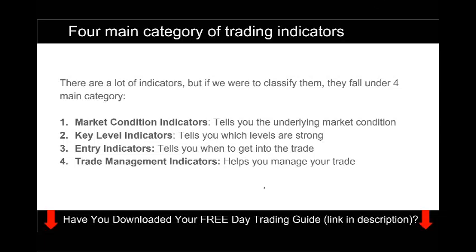The first category is market condition indicators, which tell you the underlying market condition. The second is key level indicators, which tell you which levels are strong so you can determine whether to buy or sell off that level. The third is entry indicators, which most of you are familiar with — in fact, most of you only use entry indicators, just saying 'stochastic is up, that's my entry trigger, I buy.' The fourth and last is trade management indicators, which help you manage your trades.